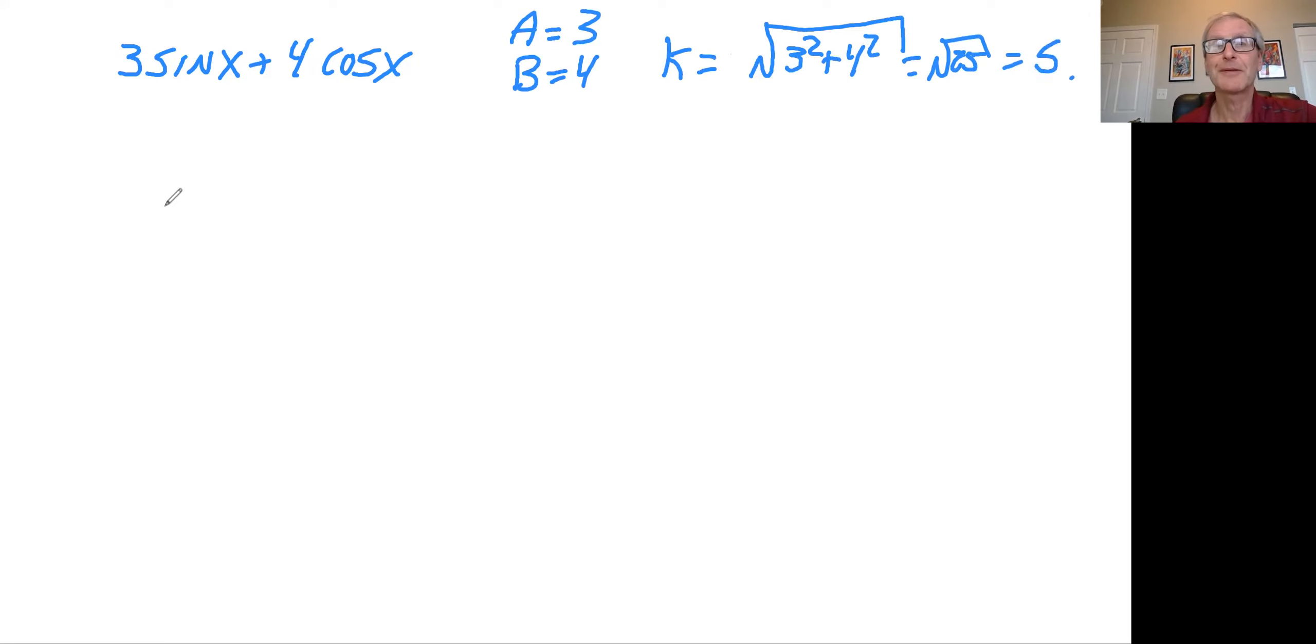So what is K? K is the square root of A squared plus B squared. So that's square root of three squared plus four squared, and you're probably sick of this number. That would be five. So how do we calculate theta? When you calculate theta, let's use cosine. Cosine of theta is A over the square root of A squared plus B squared.